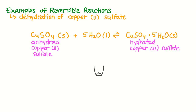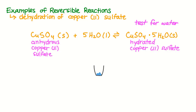Anhydrous copper-2-sulfate is a white powder. But when it's exposed to water, it forms a hydrated salt and turns blue. This makes it extremely useful as a test to identify if a substance is water. When you heat this blue, hydrated copper-2-sulfate, it drives the water out of the salt, causing the reaction to go in the reverse direction, which gives us the white powder — the anhydrous copper-2-sulfate — once again.